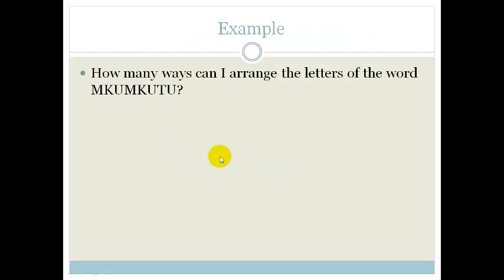Let's look at another example. It says how many ways can I arrange letters of the word MKUMKUTU. So it's M-K-U-M-K-U-T-U. But now what do you notice? First of all, let's count our letters. We've got one, two, three, four, five, six, seven, eight. So we've got eight letters all together. We've got eight letters all together. But do you see that we've got two M's? We've got two M's. We also have two K's and we've got three U's. So we need to take that into consideration when we talk about how many ways we can arrange the letters.